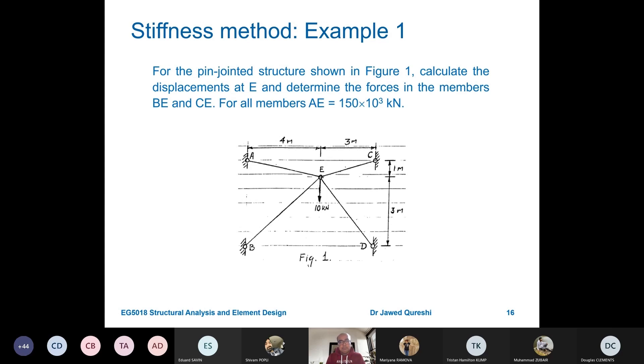A, C, B and D have a pin or simple or hinge support. It means that they will not have any kind of displacements. Only joint E is free to move, free to translate. So joint E will have translation in x direction and translation in y direction because this is a pin-jointed structure. Rotation, we are not considering at all because there are no moments. Now this makes our problem a bit easier because at point E, we will just have two degrees of freedom, which means we will just find two displacements.